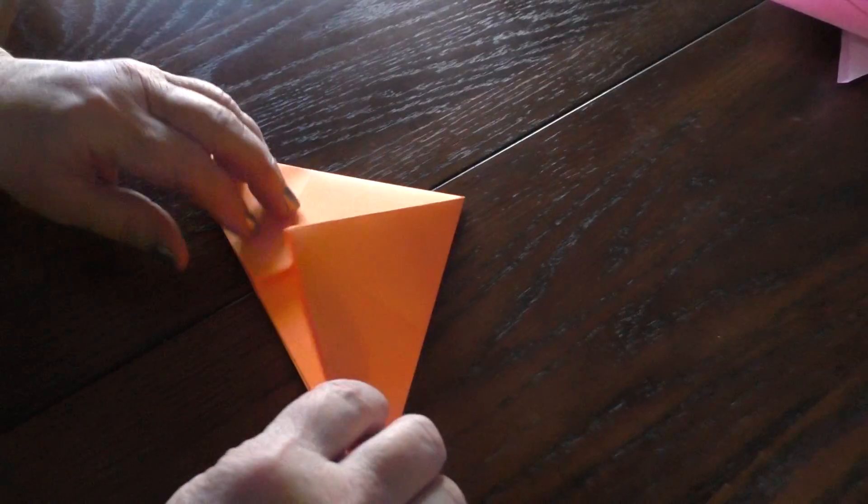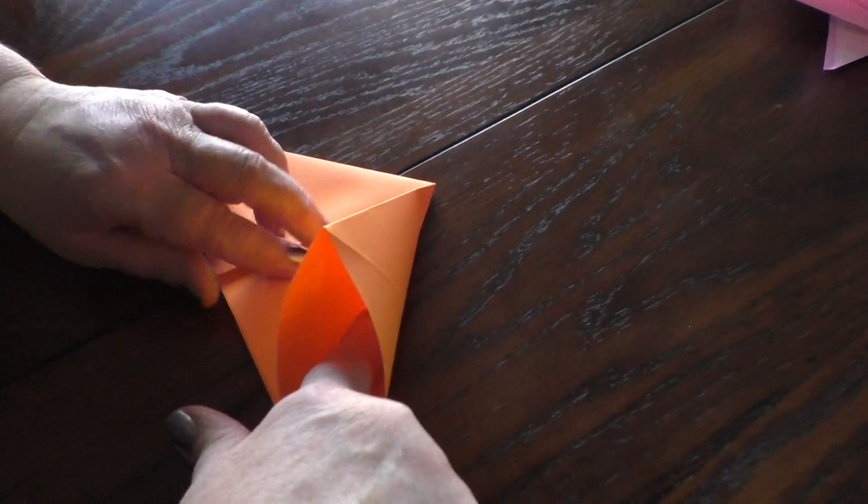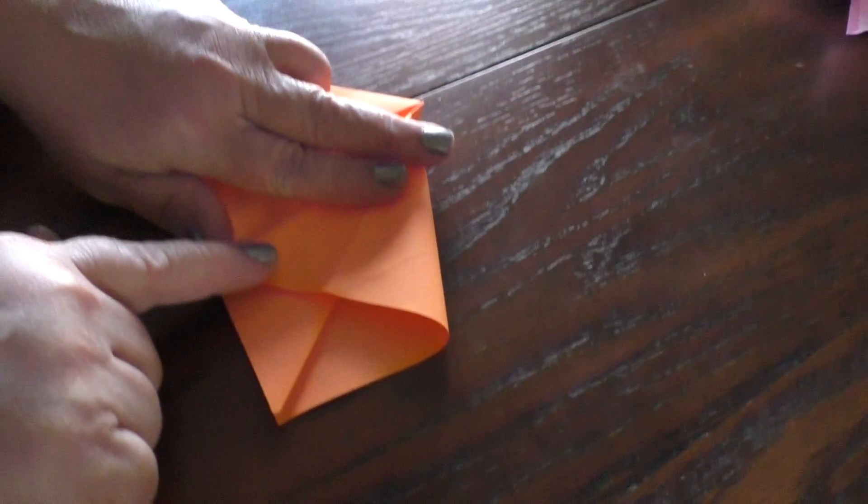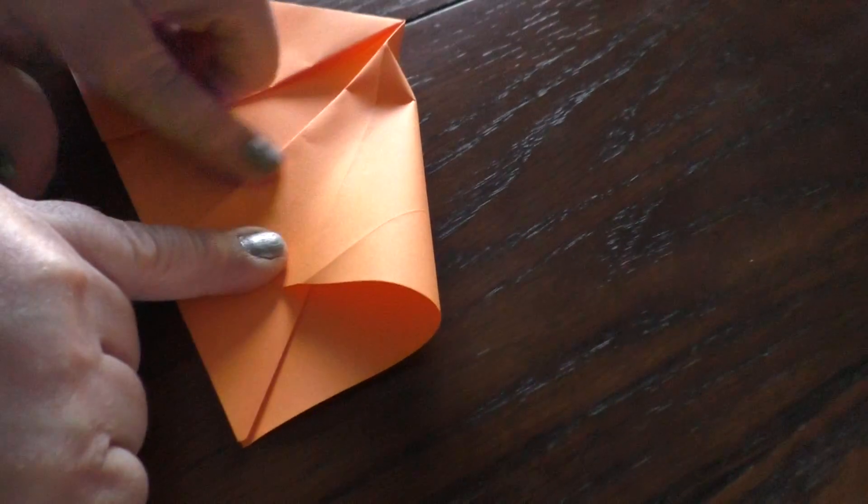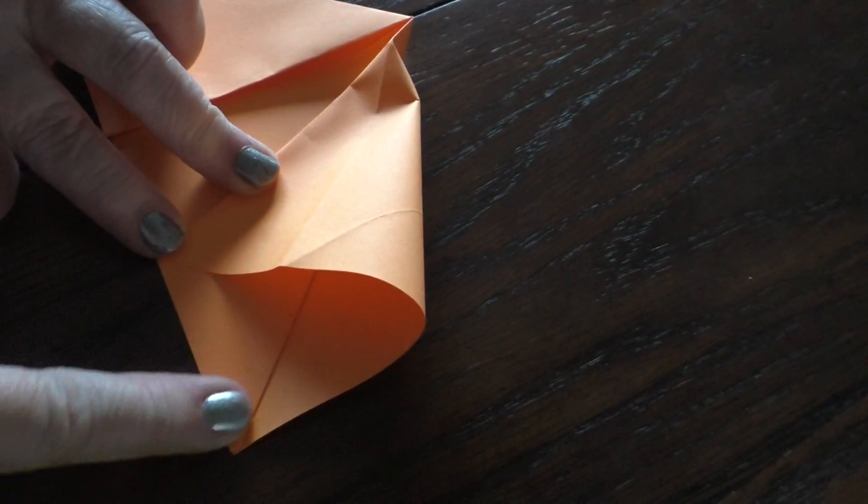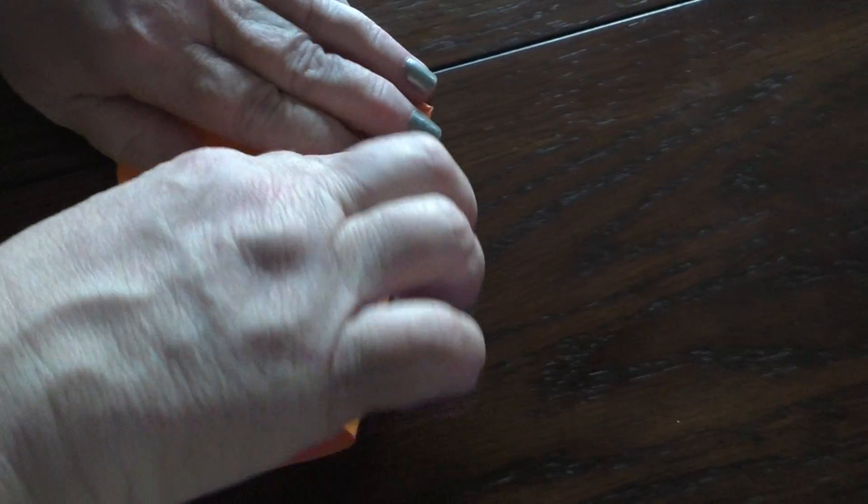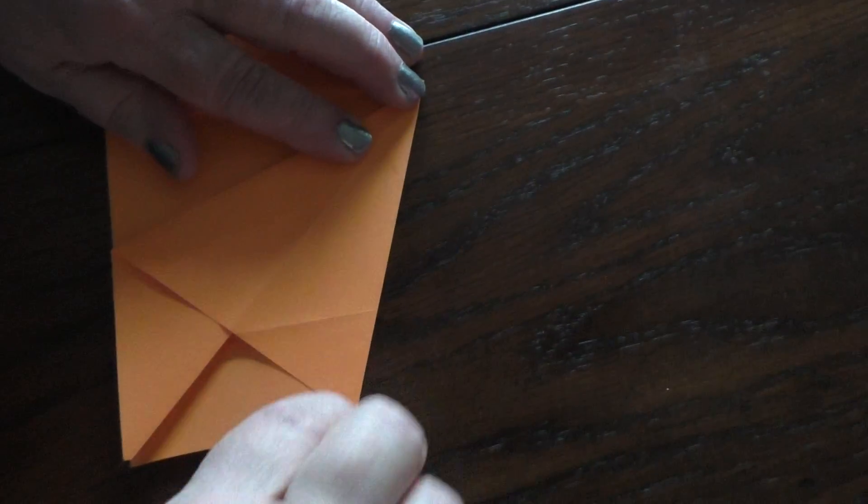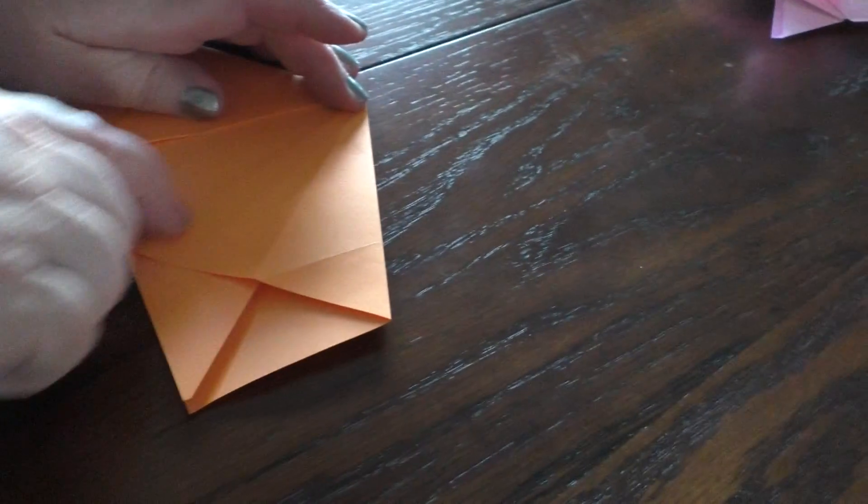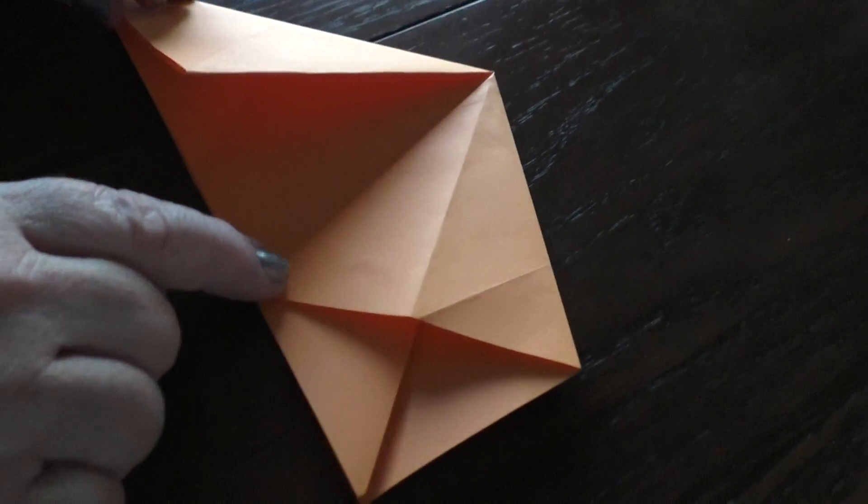Now, do you see this? When you lift this up, you're gonna put your finger in there and it's gonna be a squash fold. It kind of looks like a kite. And that crease fold lines up with this crease fold right here. Do you see that?